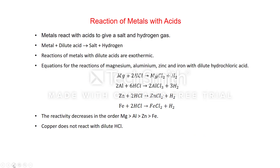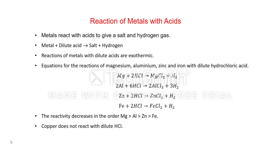First, the reaction of metals with acids. As we also discussed in the chapter on acids and bases, most metals react with acids to give a salt and hydrogen gas. Generally the acid should be dilute, so we can write: metal + dilute acid → salt + hydrogen. These reactions are exothermic, meaning a large amount of energy is released.